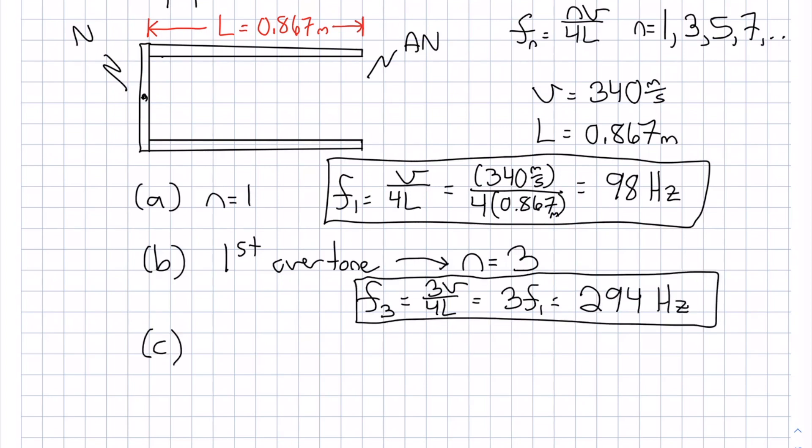The second overtone is the next allowed frequency. So it's not n equals 4, because that can't exist. It will be n equals 5, which will be 5v divided by 4L, or 5 times f1, which is going to give you 490 hertz.